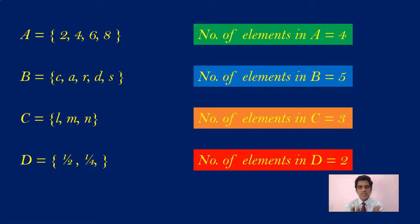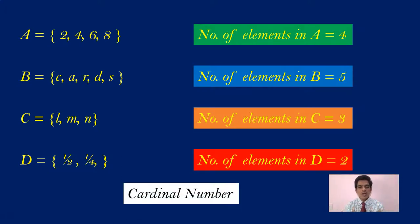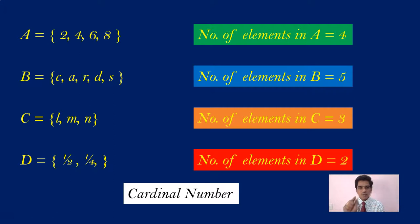Now this particular number of elements in a set is called its cardinal number. So cardinal number of a set is nothing but the number of elements present in a set. By counting the number of elements in that set, that particular number is called the cardinal number of that set.